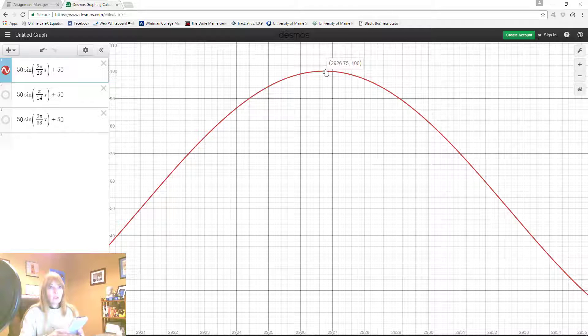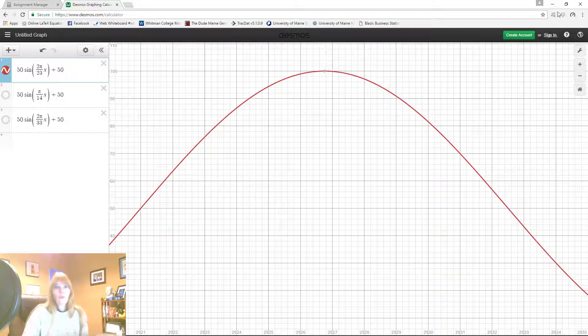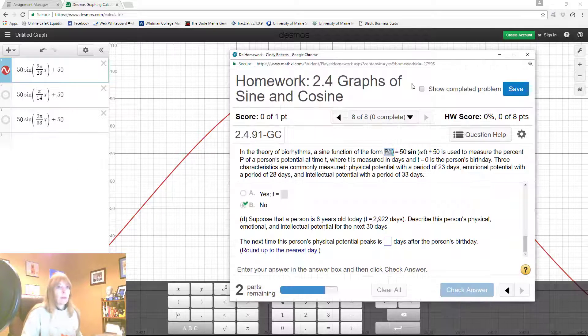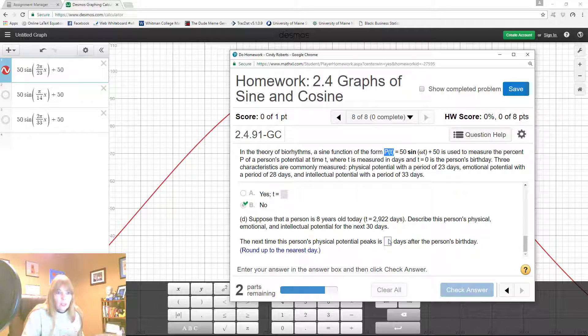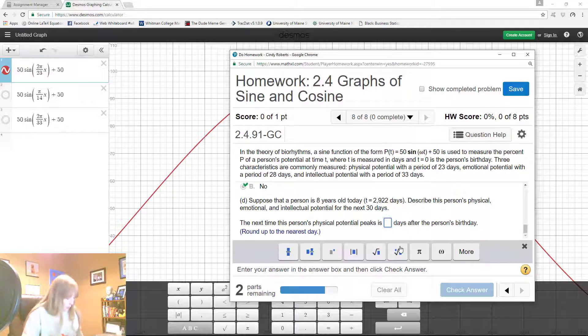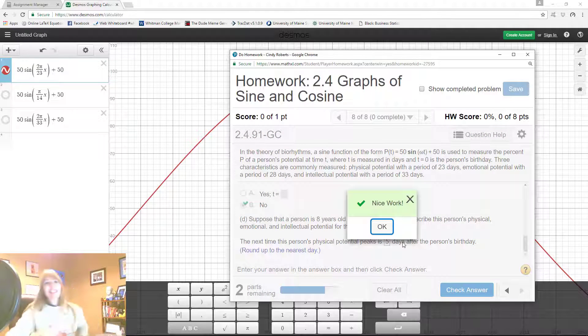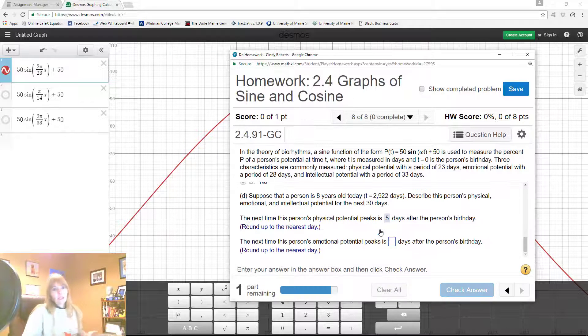So 2926.75, this is the important part, you have to round up. So what was it again? It was 2927 and then minus the 2922. Okay, so let me get right back here. So the next time it peaked, okay, the maximum is five days later. Nice work.